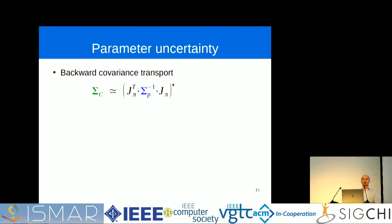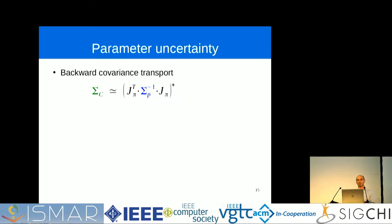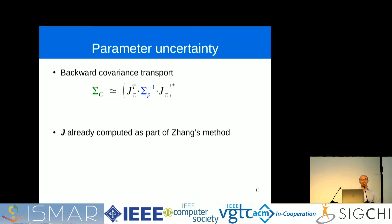To verify this claim, we want to measure the parameter uncertainty. To do so, we employ backward covariance transport. Without going into too much detail, it works by assuming some uncertainty in our input data — the pixel positions — and then by applying the Jacobian of the projection function, we arrive at the covariance matrix for the projection parameters. A note here is that the Jacobian is already computed as part of Zhang's method for the nonlinear optimization, so we get it for free.